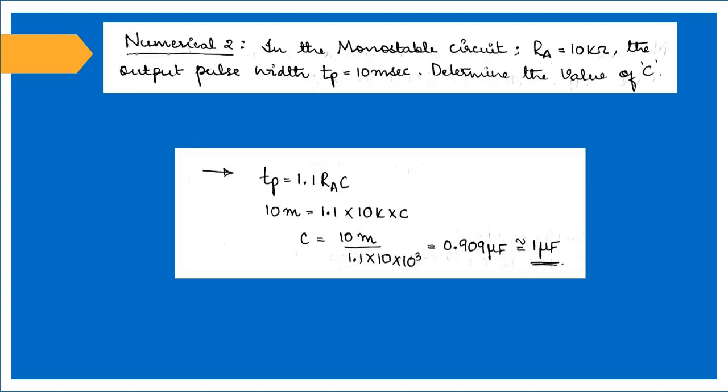The difference between the previous problem and this one is that pulse width was represented as T, whereas here it's Tp. It's just a difference in variable representation, but the equations remain the same.